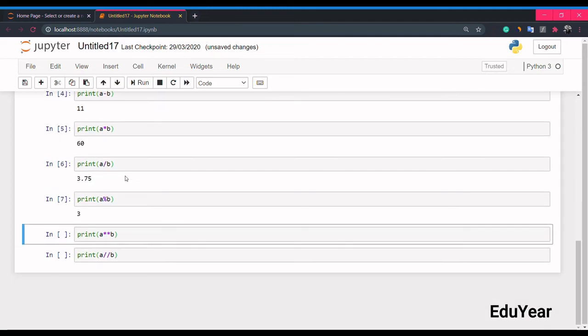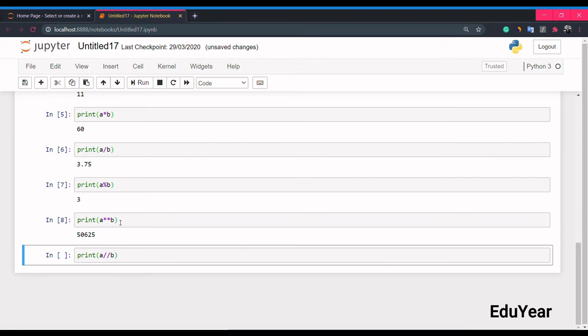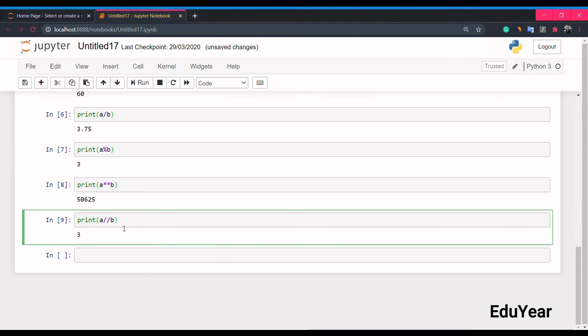...that is a to the power b. For example, 15 to the power 4 equals 50,625. a floor divide b, which means the smallest and the closest integer to the divide. Example: when a divides b was 3.75, so the floor division will be 3, that is the closest and smallest integer.